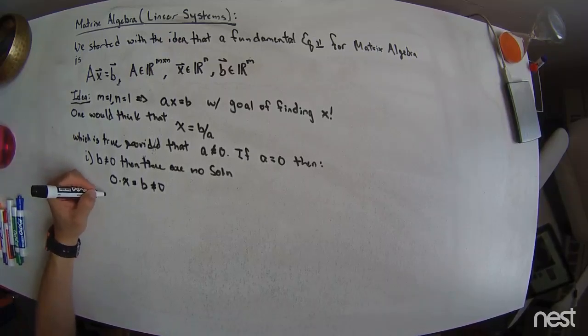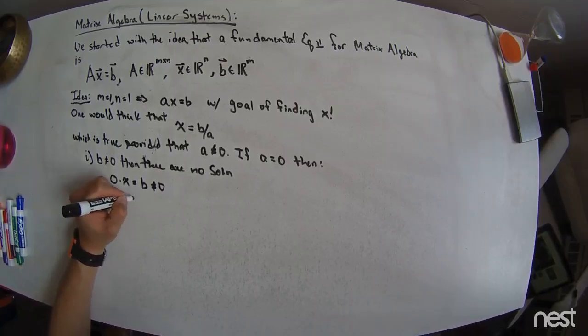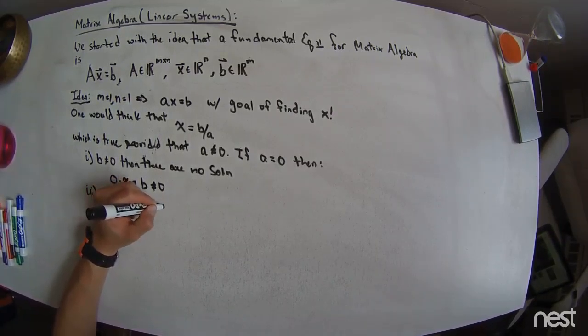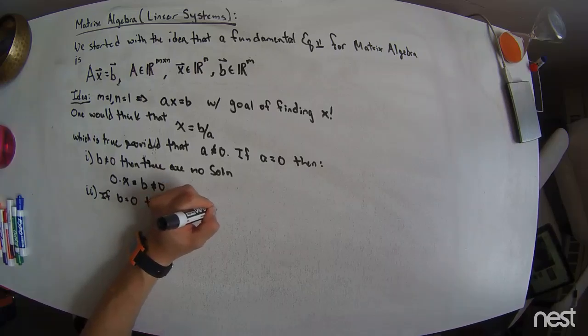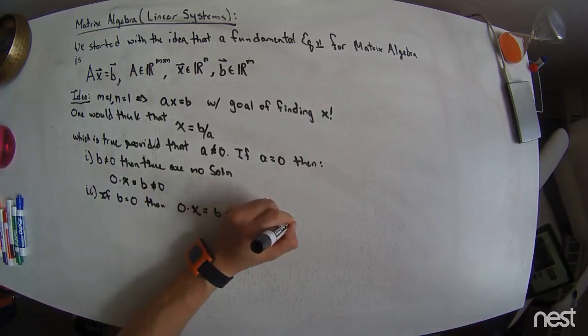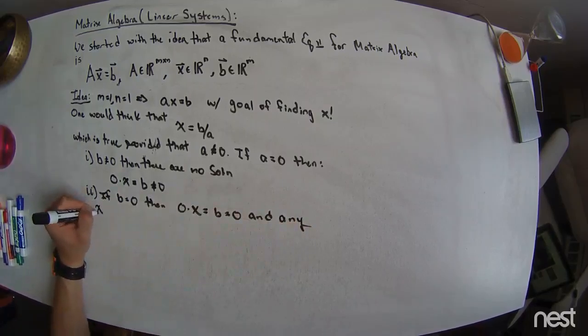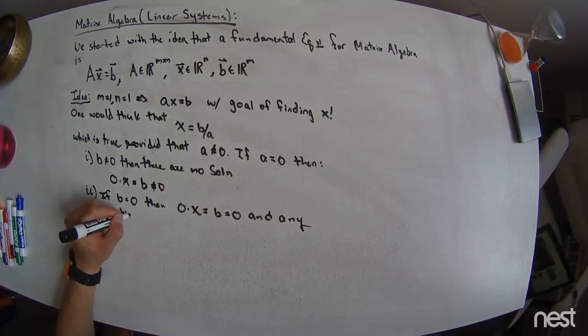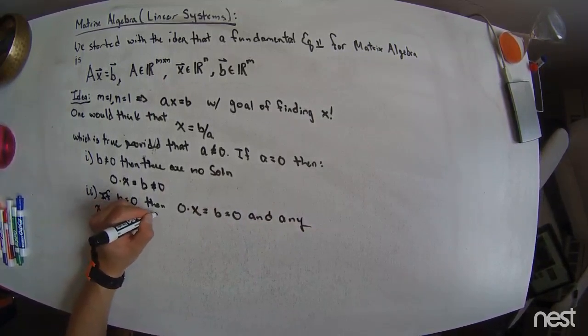All right, well, if b is equal to 0, then 0 times x equals b, which is 0. And any x satisfies this equation.